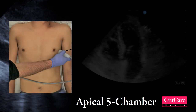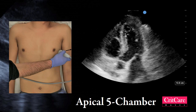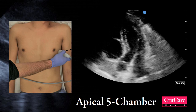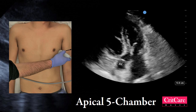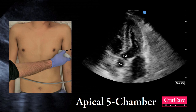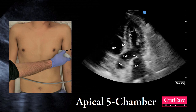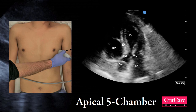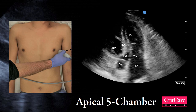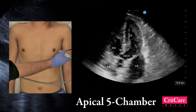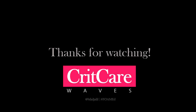The 5th chamber is the aortic valve, with the left ventricular outflow tract seen between the left ventricle and the aortic valve. All other structures are the same as shown in the 4-chamber view previously. Those are the apical views you need to know. Thanks for watching!